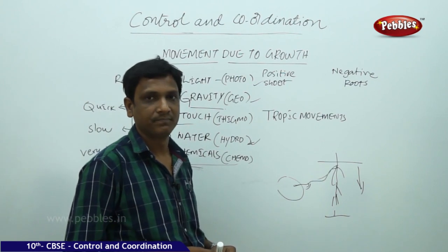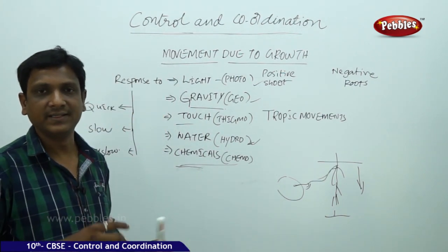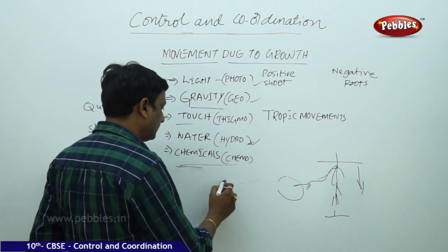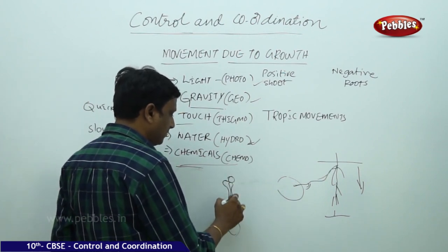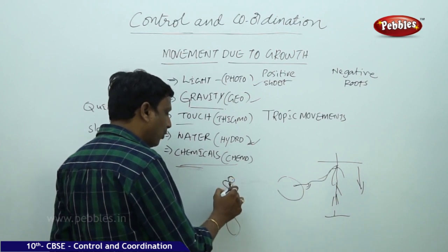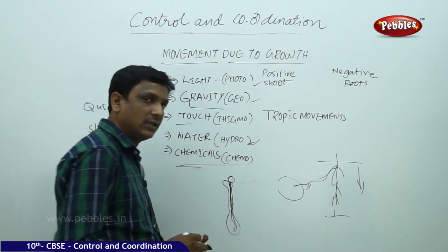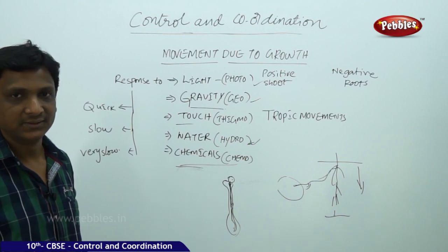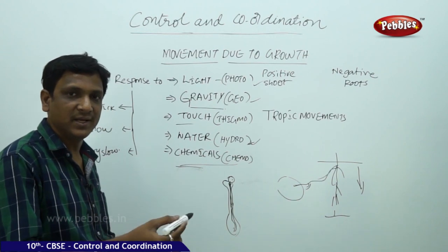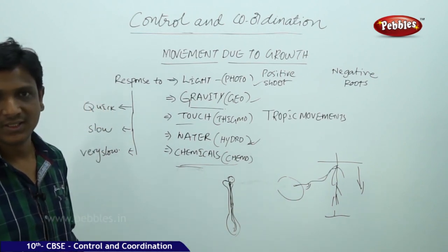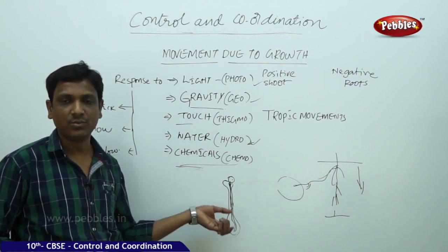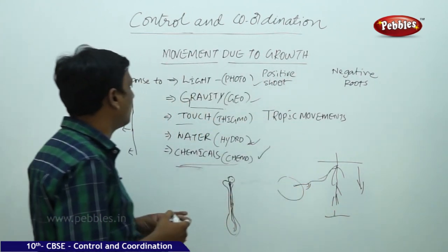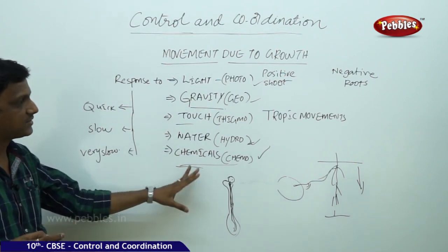The other tropism is chemotropism — movement in response to chemicals. The example is fertilization in a flower. When a pollen grain reaches the stigma, the pollen tube grows downward and extends into the ovule. The pollen tube knows the direction because of chemicals present inside the ovary. Tropic movements towards chemicals are called chemotropism. All these tropic movements are associated with growth.